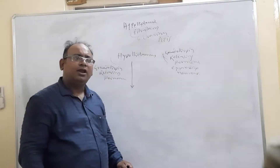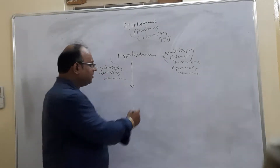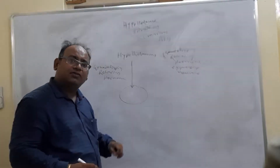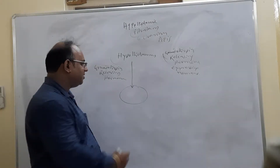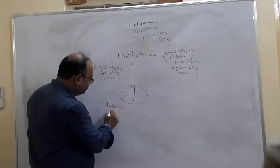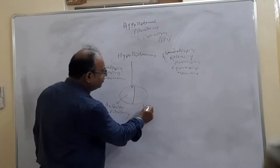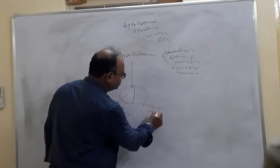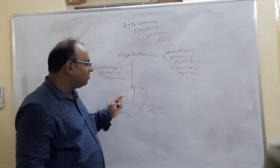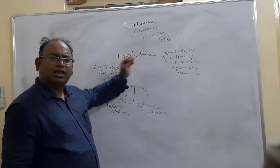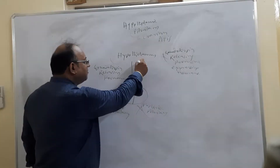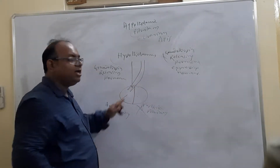This gonadotropin-releasing hormone comes directly into the pituitary gland. The pituitary gland has two major lobes: one is the anterior pituitary and another is the posterior pituitary. We will focus our discussion mainly on the anterior pituitary. So from the hypothalamus, the hormone gonadotropin-releasing hormone comes directly into the anterior pituitary.